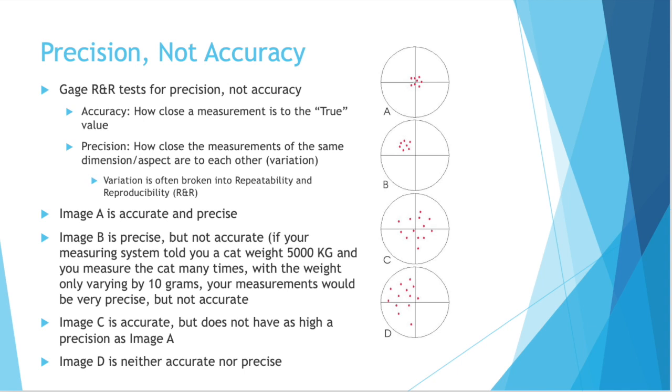Image B is precise, but not accurate. See how all the dots are still clustered together? That's precision, but they're not at the center of the crosshair. They're not as accurate as A. If your measuring system told you that a cat weighed 5,000 kilograms, and you measure that cat many times, with the weight only varying by 10 grams, your measurements would be very precise. They keep giving you the same results. But they're not accurate, because a cat does not weigh anywhere close to 5,000 kilograms.